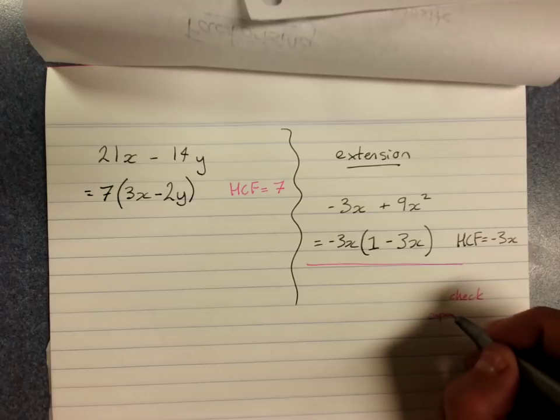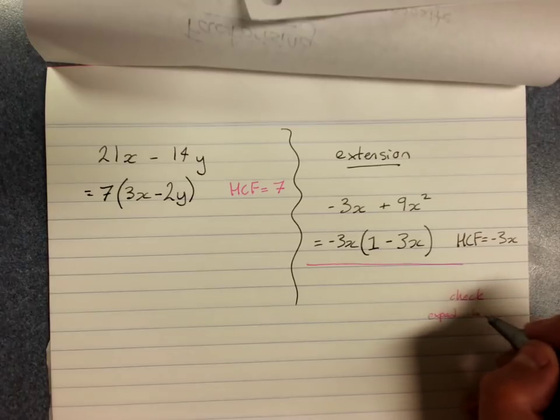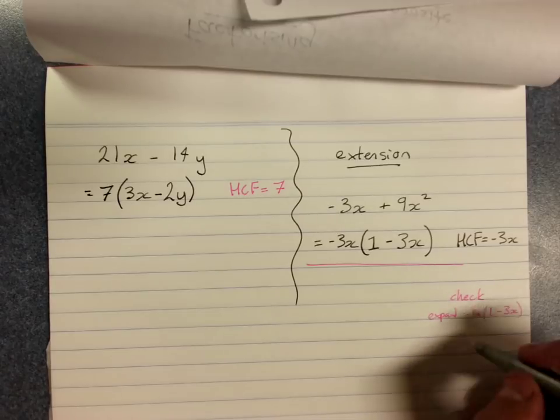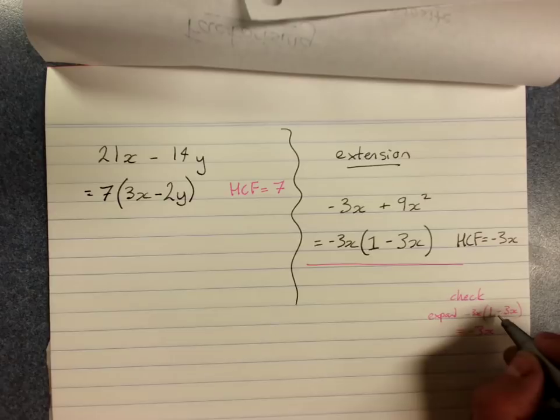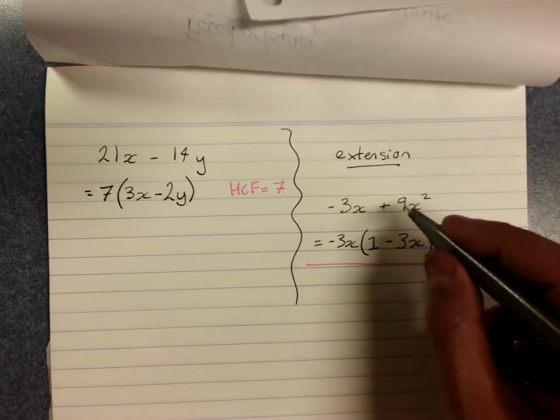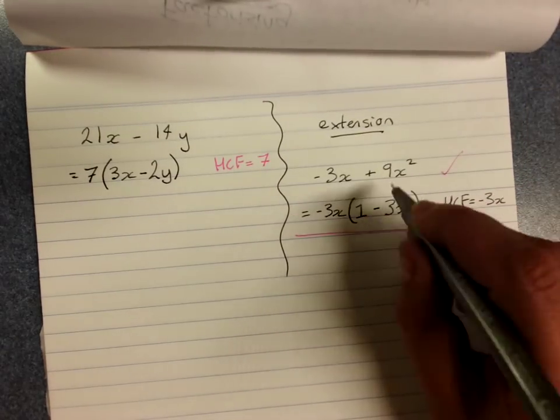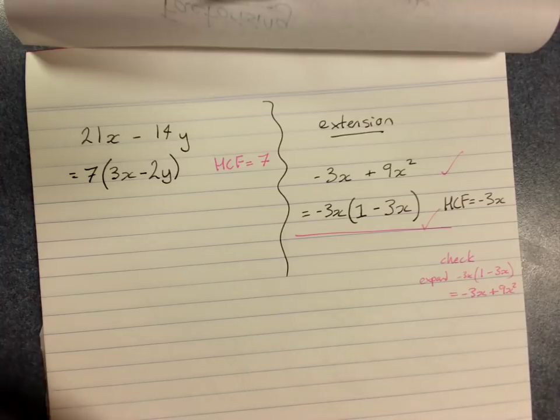Expand. Negative 3x outside of 1 minus 3x. Negative 3x times 1 is negative 3x. Negative 3x times negative 3x is plus 9x squared. I got the same result as my question, so I know that I have factorized correctly.